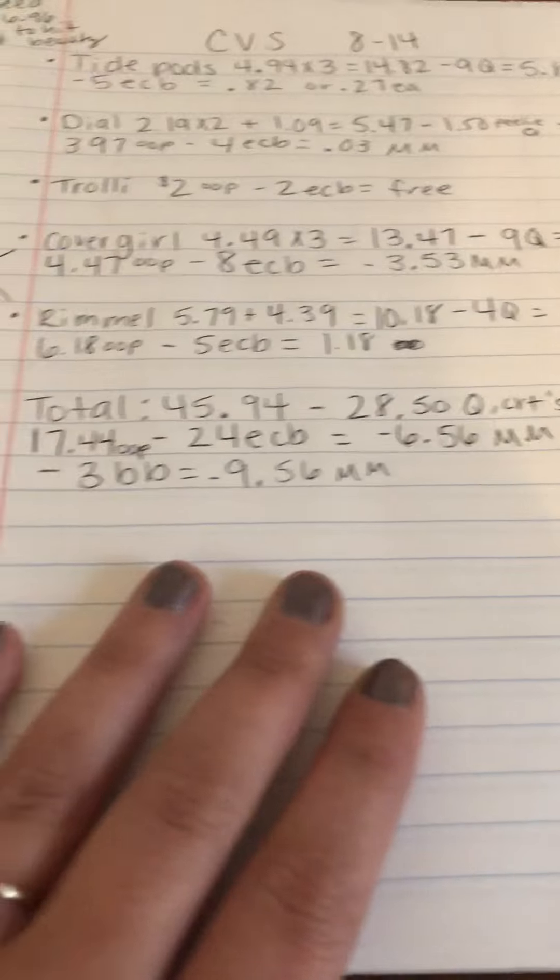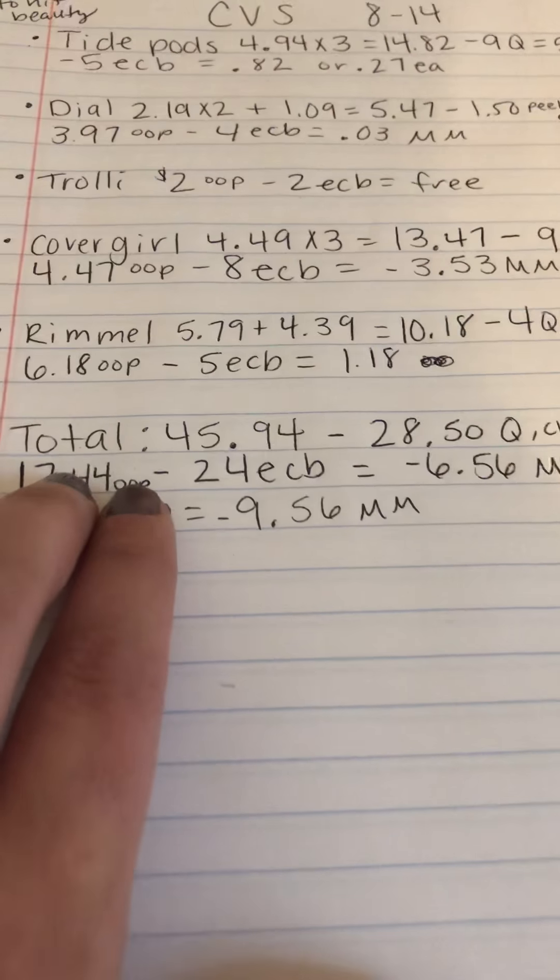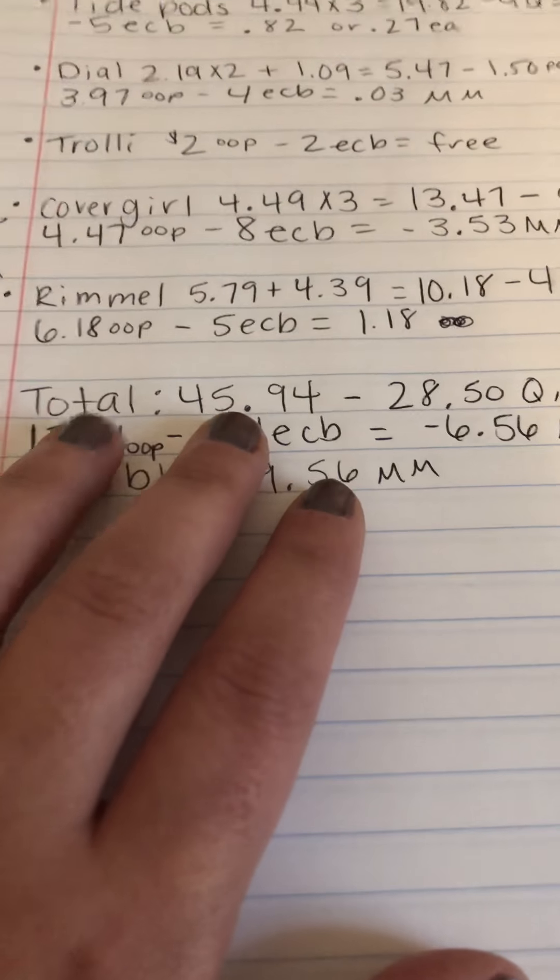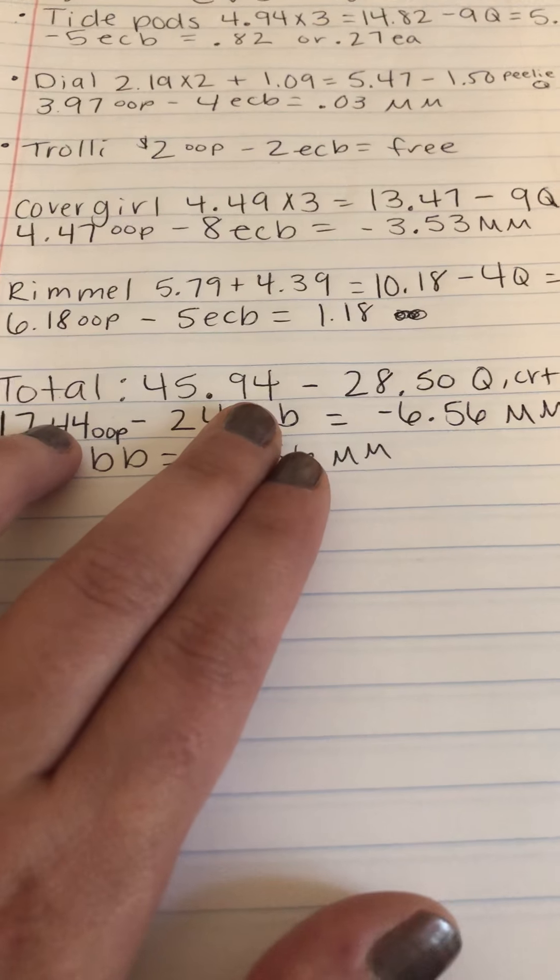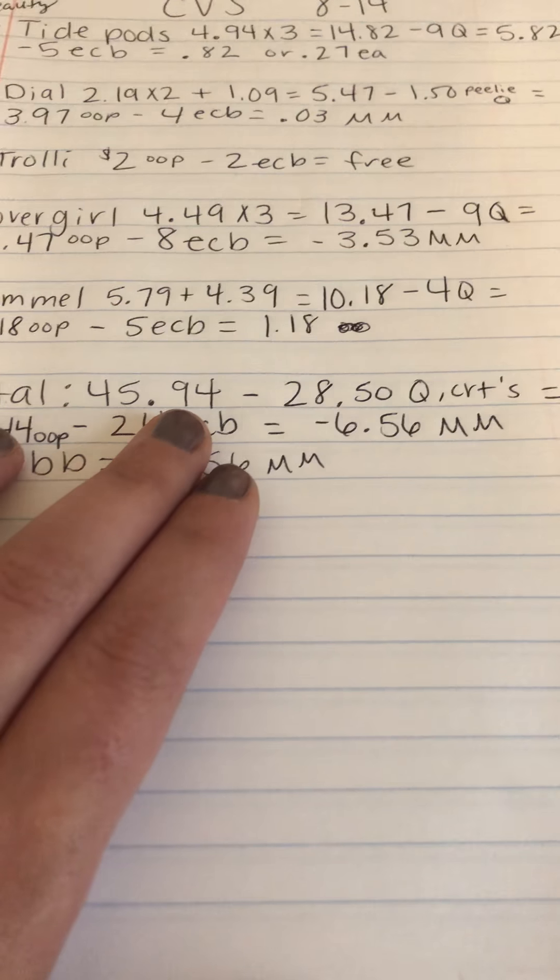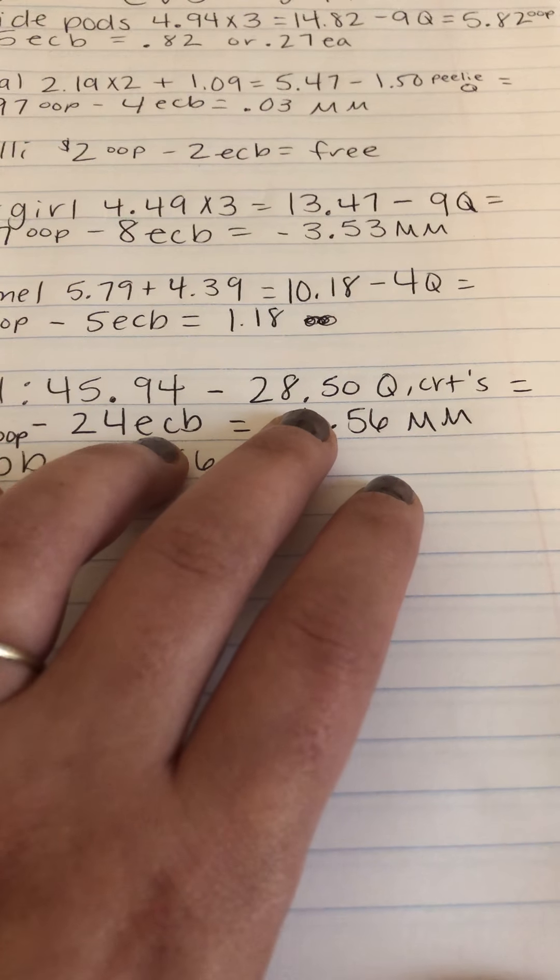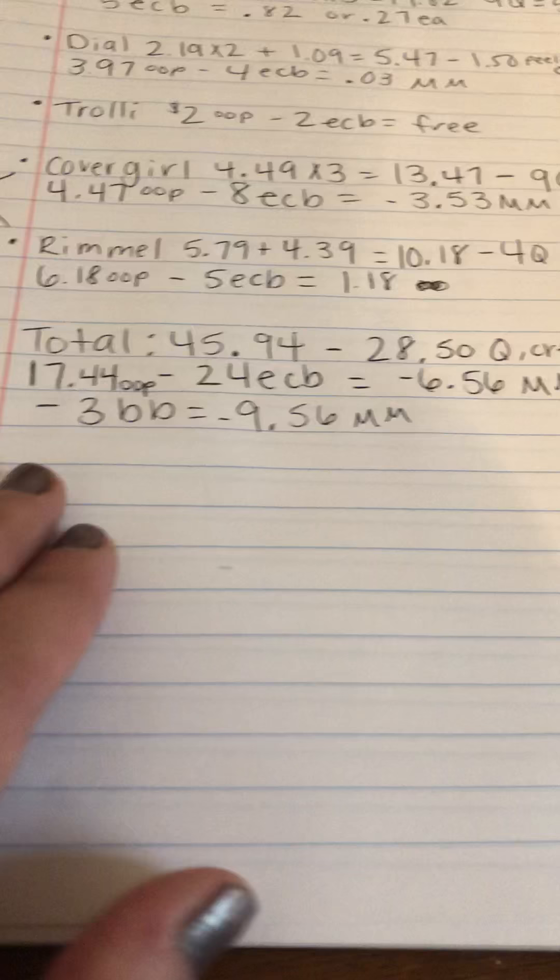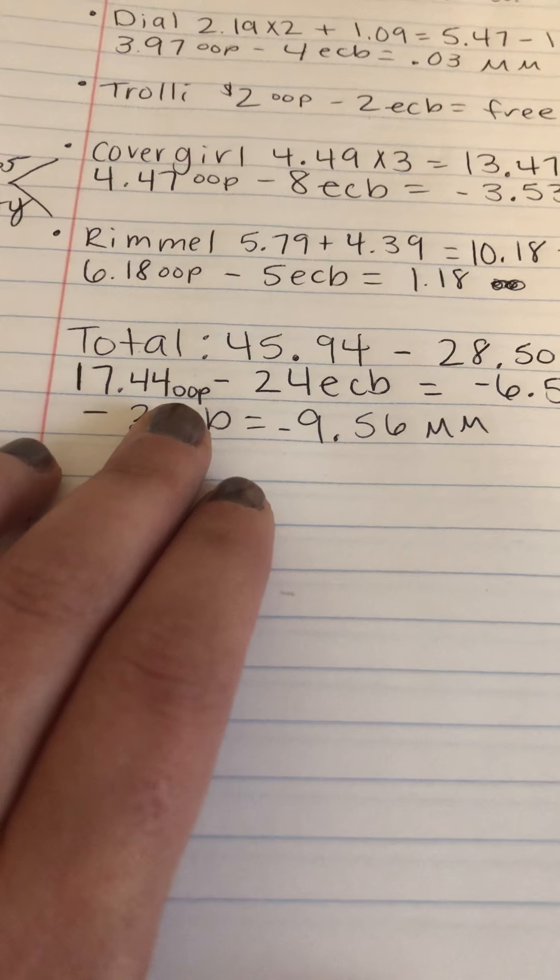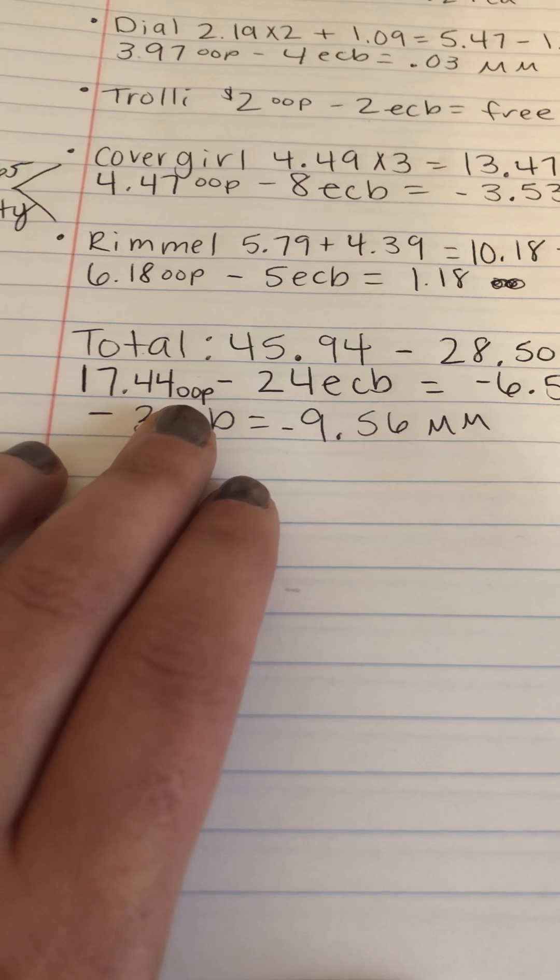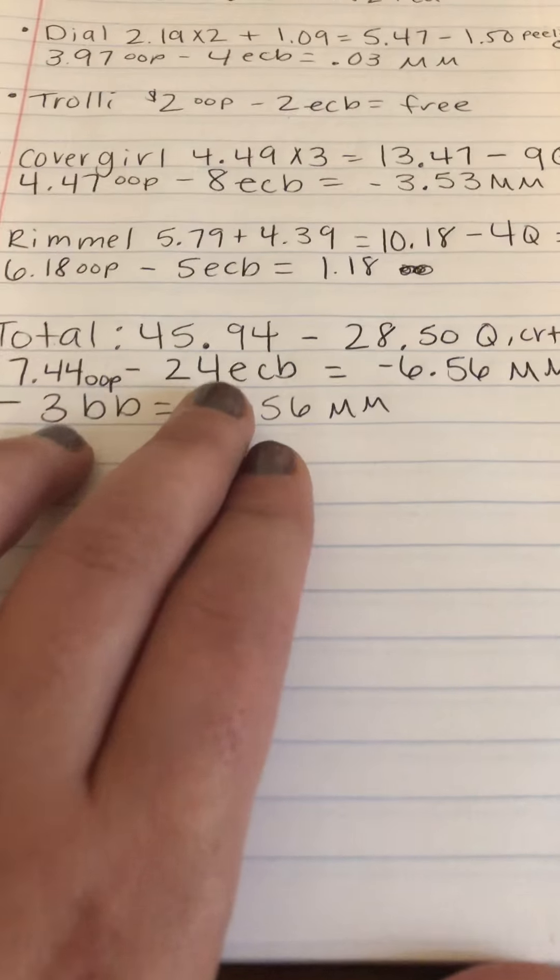But when you throw all this into the $5 off $40, this is how it broke down for me. So my total for the first transaction and the second transaction was $45.94 before coupons, extra bucks, and CRTs. I used $28.50 in coupons and CRTs.